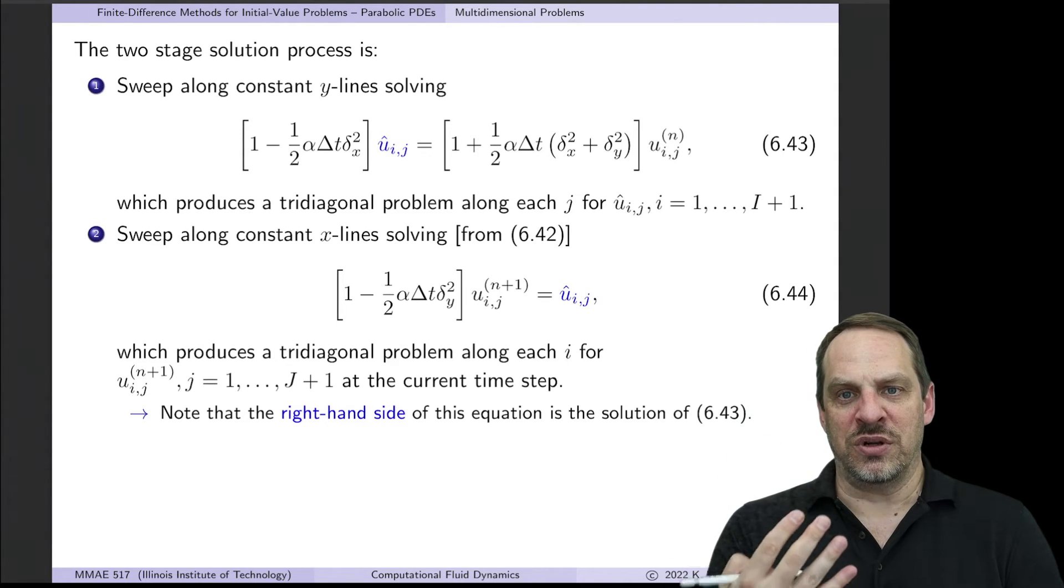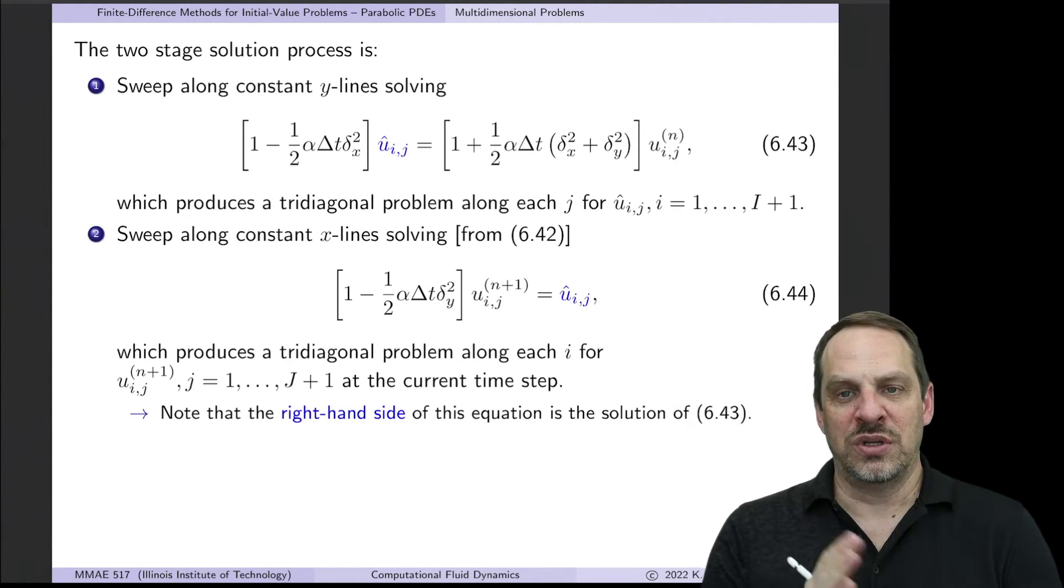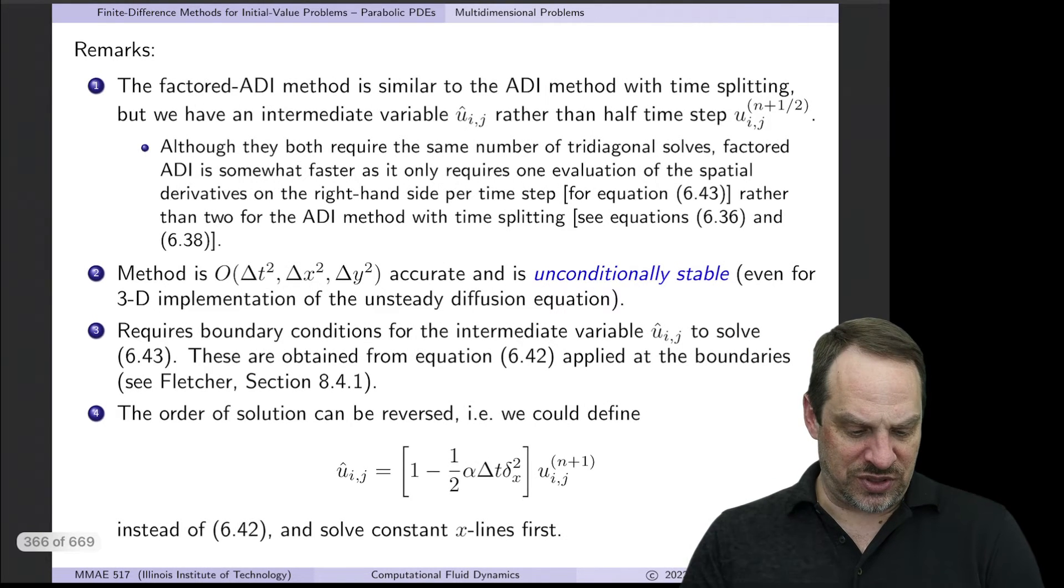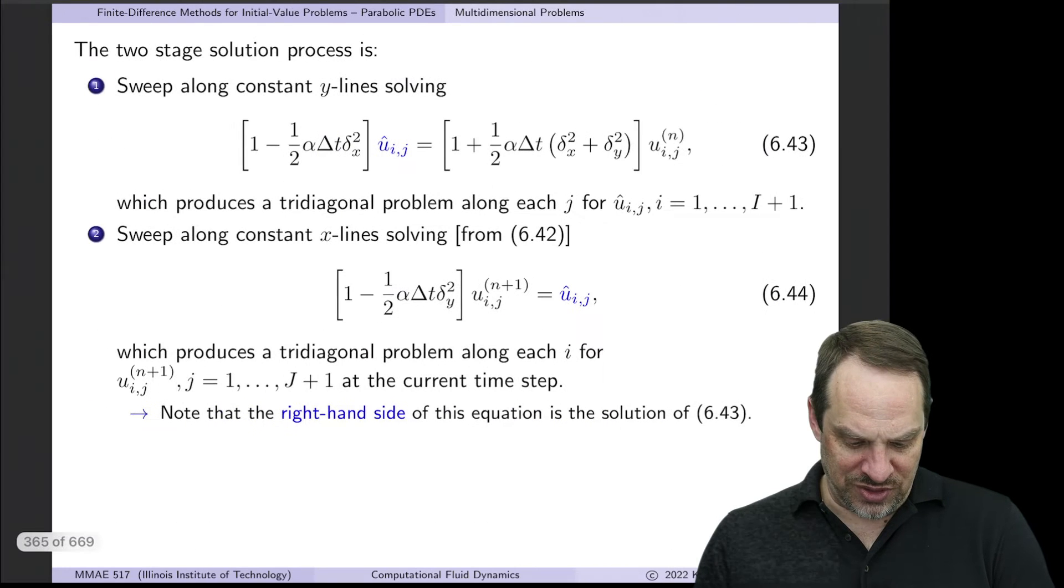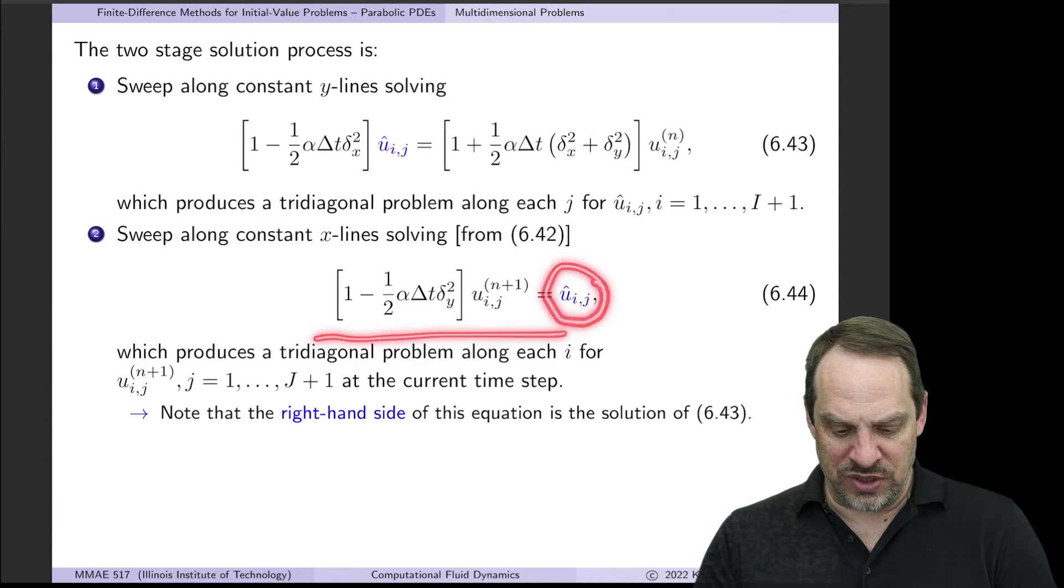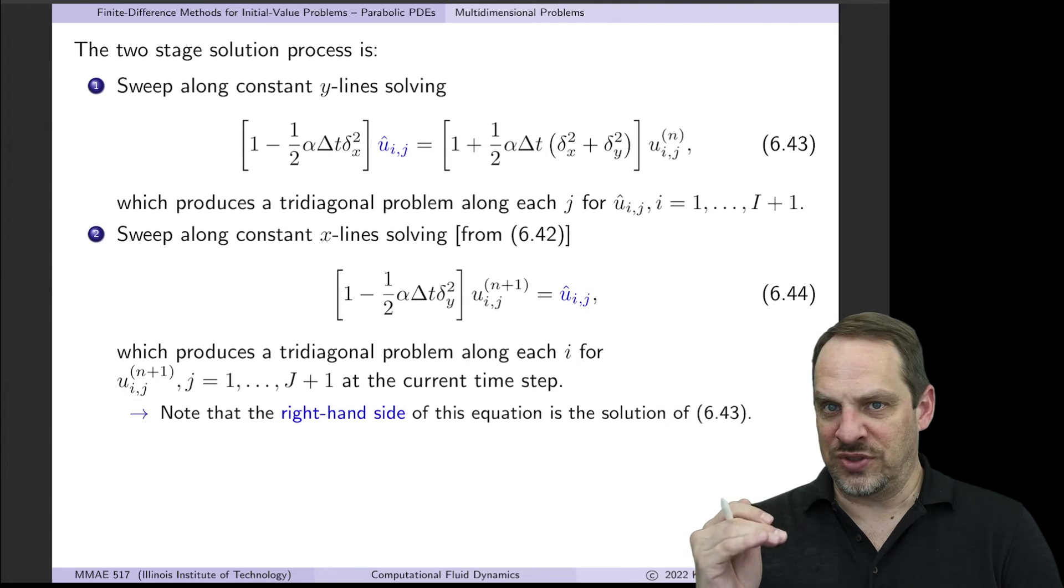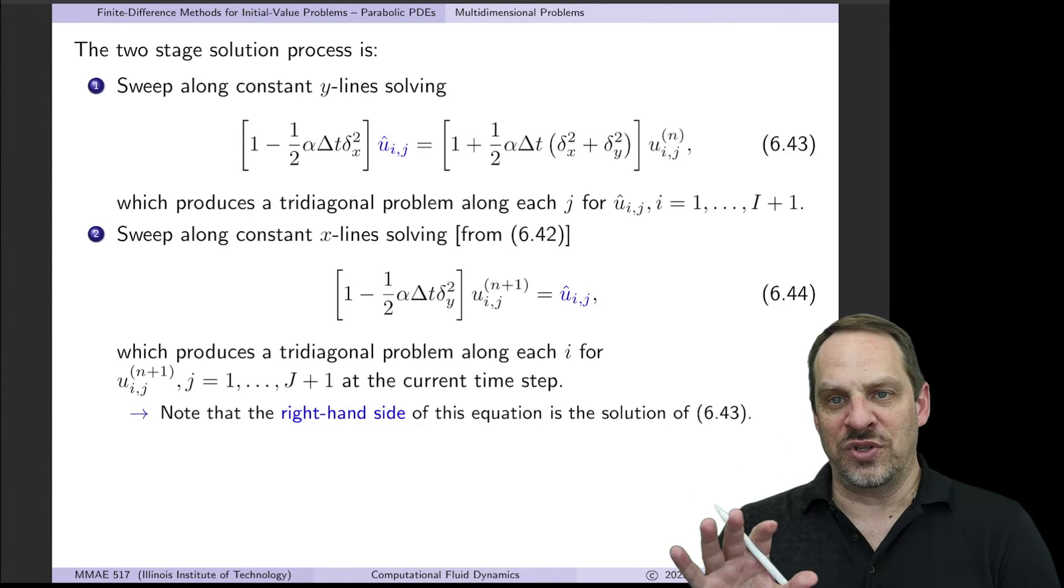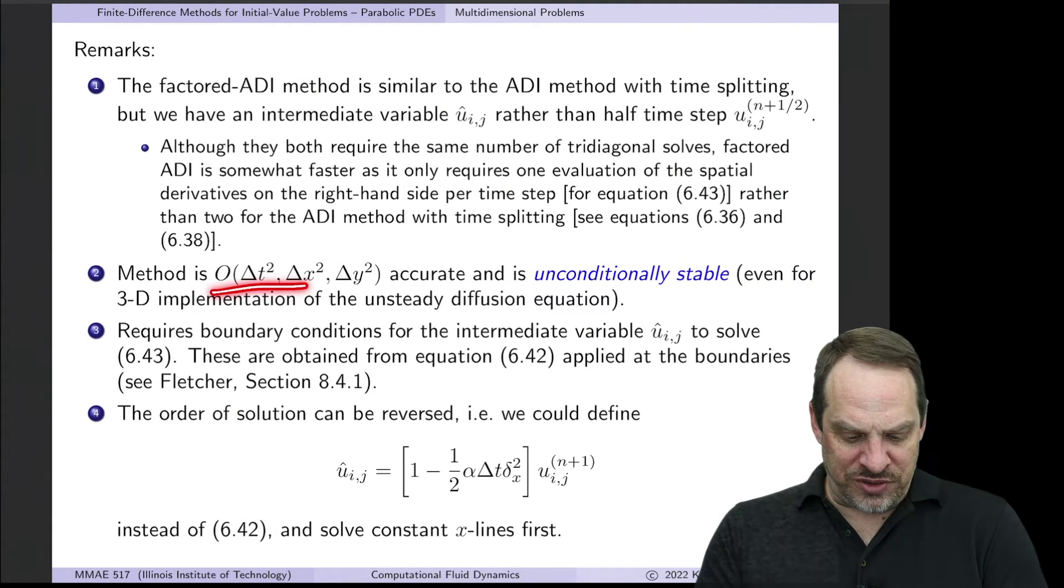So you can see, again, it's very similar to the fractional step method, the ADI method with time splitting, in the sense that we have this ADI type approach. That's the name, factored ADI. But it's now slightly different. It's still the same number of tridiagonal solves. But what you'll notice is, for the second one, what's on the right hand side is just these values, u_ij hat. Whereas in the fractional step method, the corresponding right hand side had a whole lot more calculation that had to be done. Still the same number of tridiagonal solves, but a little less calculation. So therefore, a little less computational time to get all the coefficients required for the tridiagonal solves. Not a huge savings, but there is some savings.